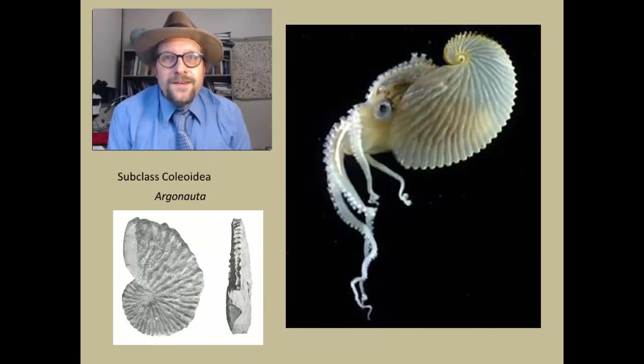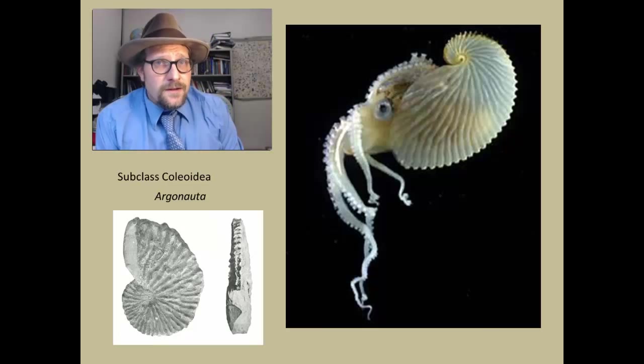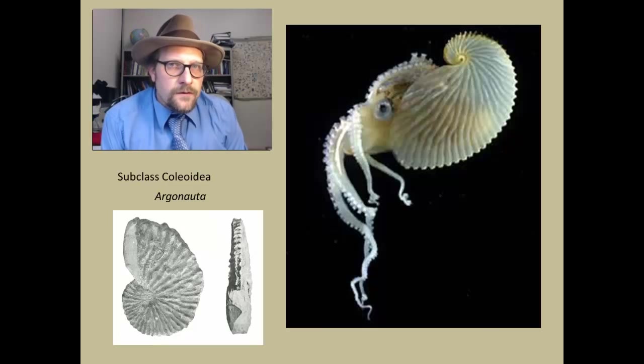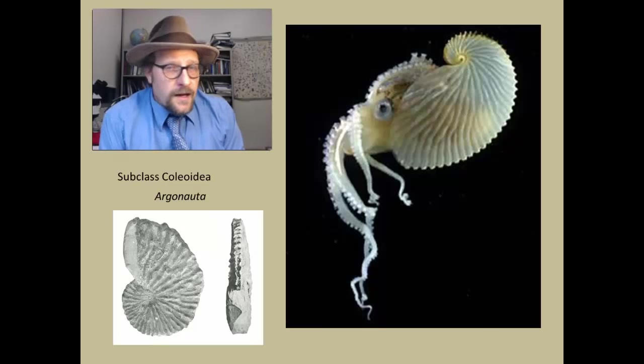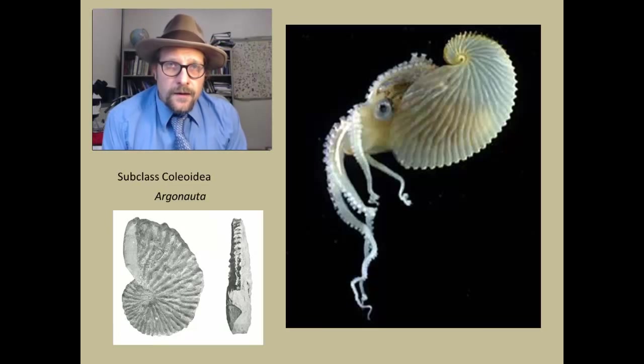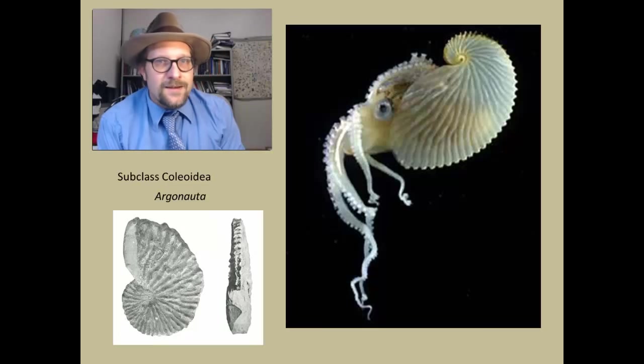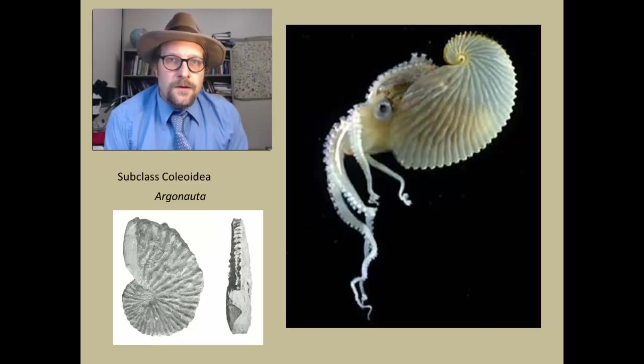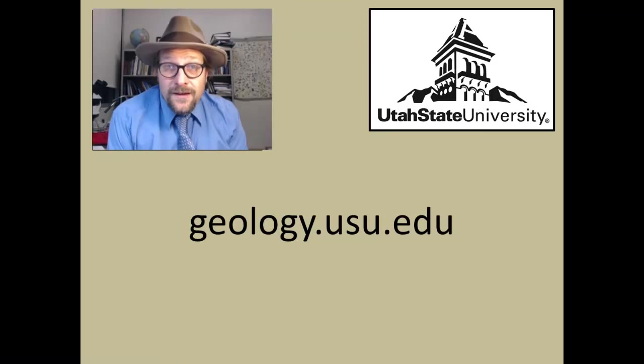Before I sign off with this lecture, I wanted to mention something about what an argonaut is. These are also called the paper nautiluses, and while they look like a nautilus or even an ammonite, they are actually the reproductive chambers of female octopuses. The female octopus of the species secretes this thin shell and fills it with air. These are used to help incubate the eggs and brood baby octopuses, and sometimes even trapping tiny males inside these chambers. These shells are not attached to the animal, and the octopus can float free of these chambers. They are sometimes preserved in the fossil record and are known in the late Cenozoic.